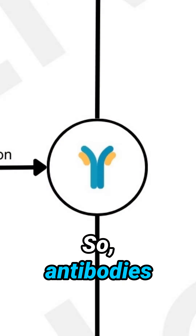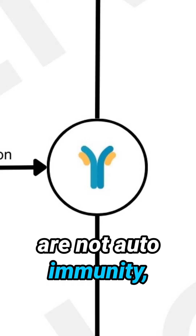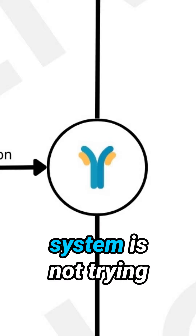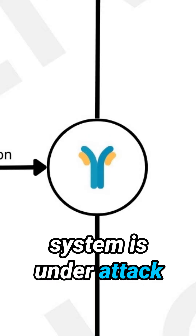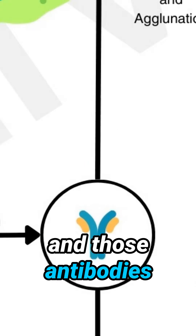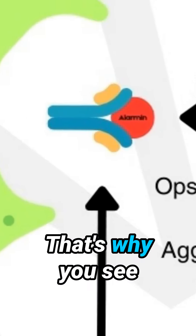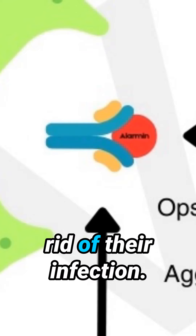So antibodies are not autoimmunity. Your adaptive immune system is not trying to attack you. Your system is under attack and those antibodies are the cleanup system. That's why you see people's antibodies lower once they get rid of their infection.